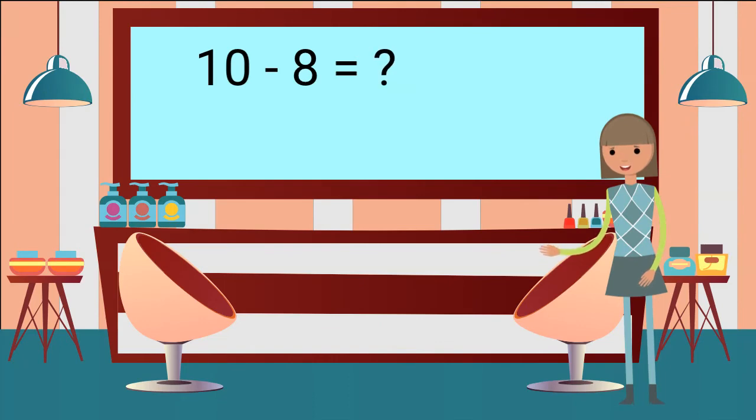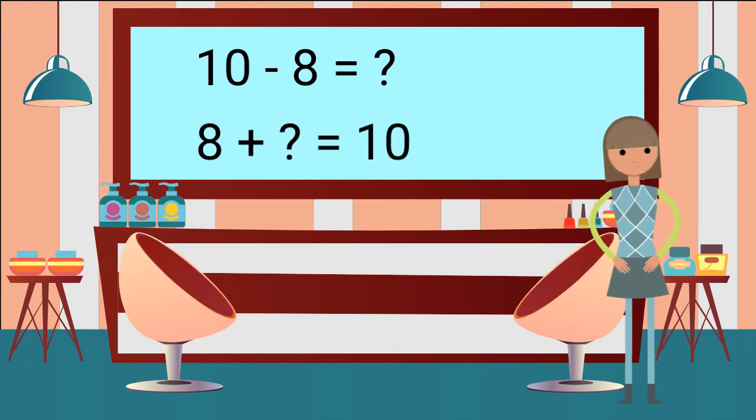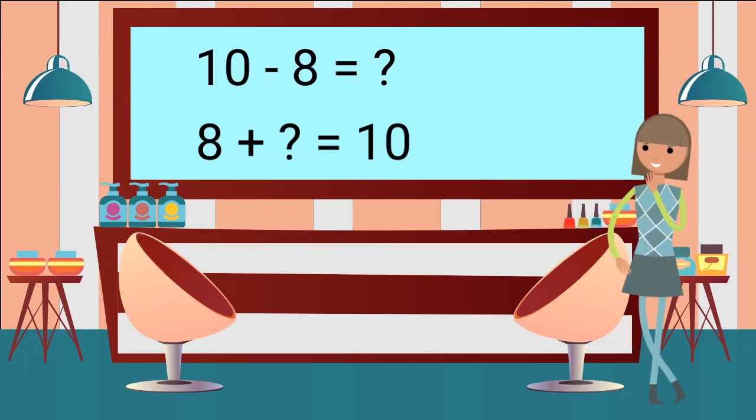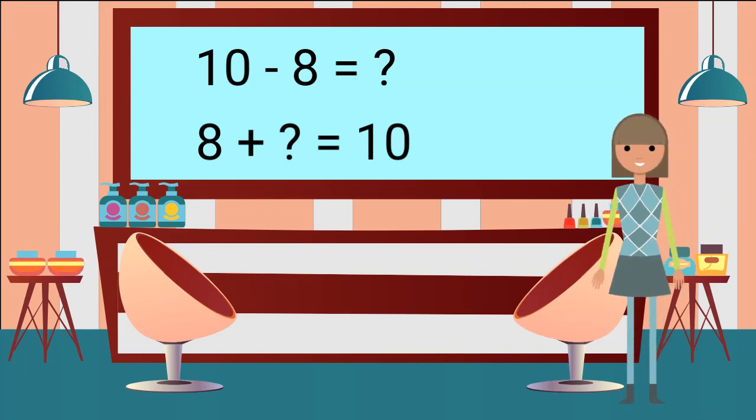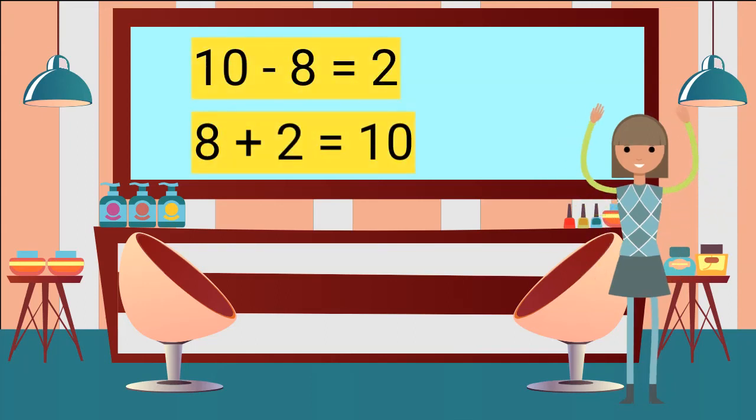If you want to solve 10 minus 8, you can think to yourself, how many more can be added to 8 to make 10? Do you know the answer? Yes! 10 minus 8 equals 2 because 2 plus 8 equals 10.